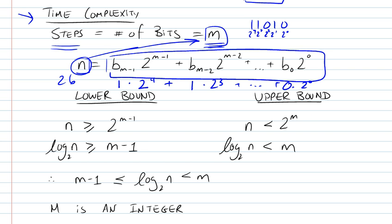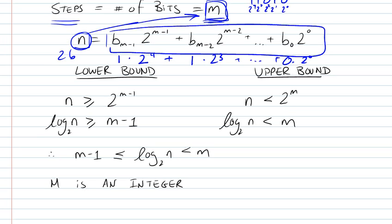But now we're looking at the general case where we have a number n and we're trying to find m, because as soon as we find m, we're going to find the complexity. So let's try to find lower bounds and upper bounds for this number m. We know that n must be larger or equal to 2 to the m minus 1.